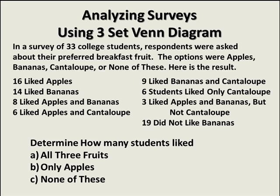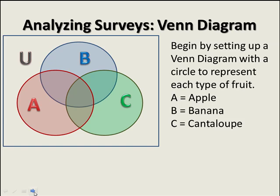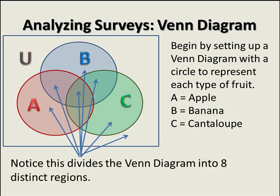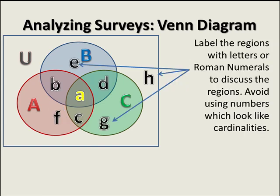Determine how many students liked: A, all three fruits; B, only apples; and C, none of these. One thing to keep in mind is that we cannot assume any information not explicitly stated. The first fact says 16 liked apples — we can't assume they only like apples. We'll set up a Venn diagram with a circle for each fruit: A for apple, B for banana, C for cantaloupe. This divides the diagram into eight distinct regions, labeled with letters to discuss their cardinalities.